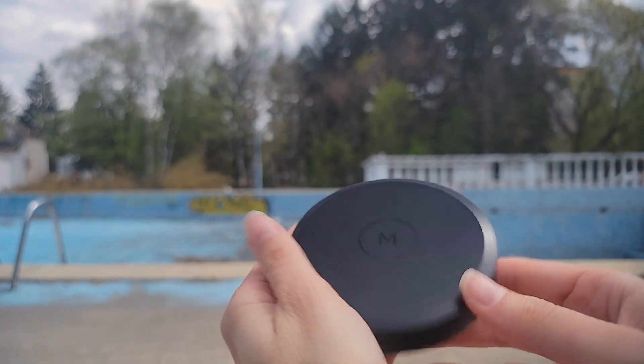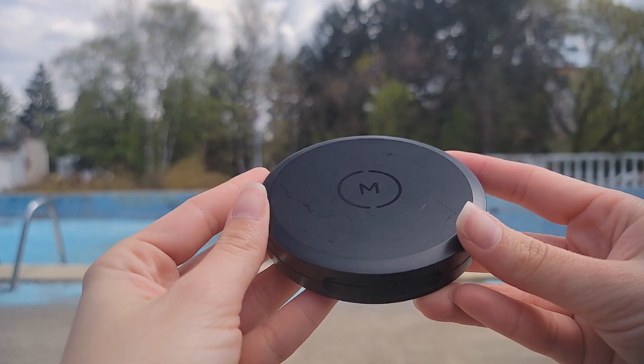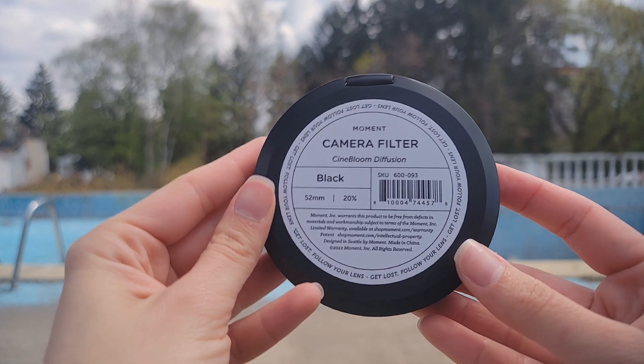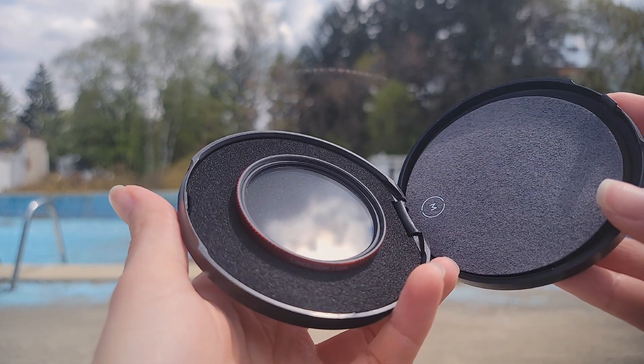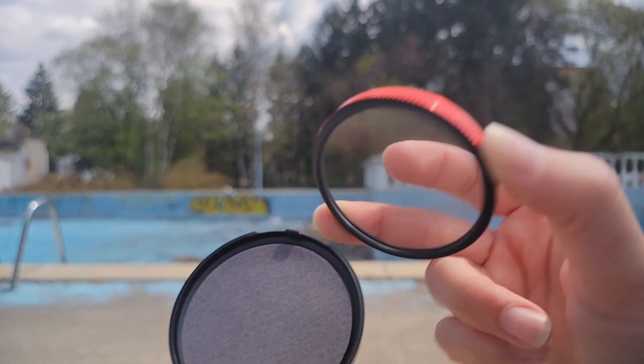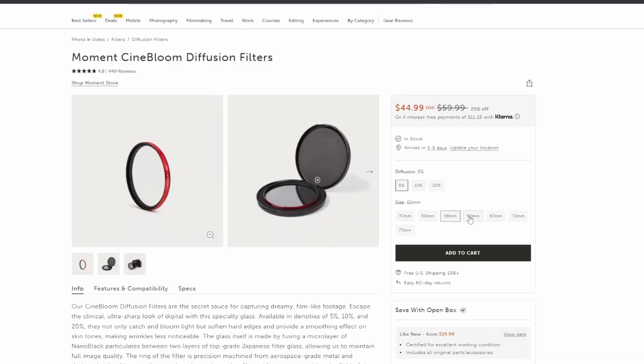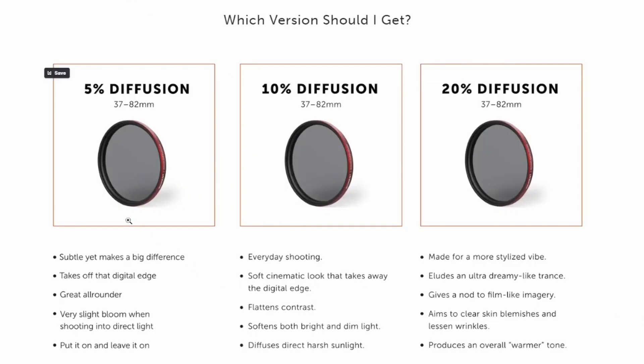You can use a mist filter, which are quite popular, or you can use a cine bloom diffusion filter like this one from Moment. This is the 20, 52mm Moment Cine Bloom filter. Moment Cine Bloom filters are available in densities of 5%, 10%, and 20%. The 20% is the strongest of them all and is the one that I have.